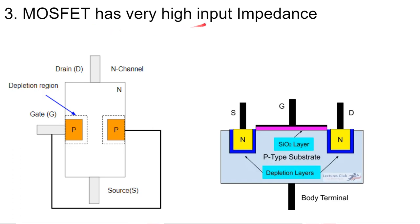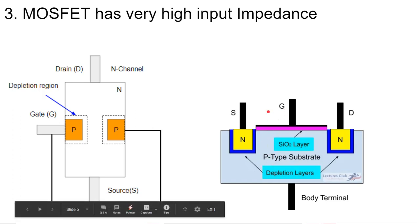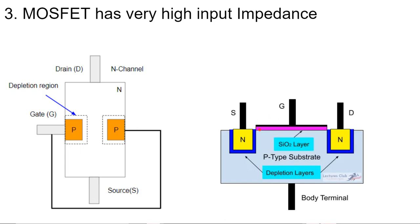The third difference is that MOSFET has very high input impedance. The MOSFET has input impedance at the gate on the order of 10^40 ohms, whereas JFET has input impedance of the order of 10^9 ohms. This high impedance is achieved because of the insulating layer of silicon dioxide, which does not allow the flow of electrons between the gate and the body. Because of this insulation, MOSFET draws less current at the gate compared to JFET, where the gate is not isolated from the body.